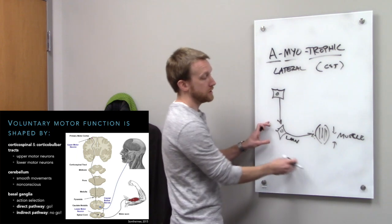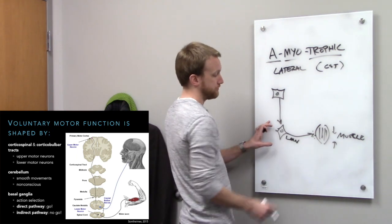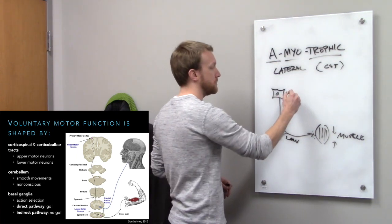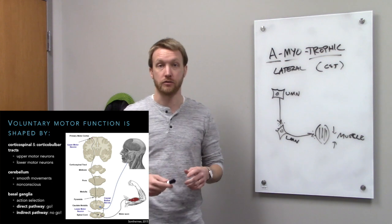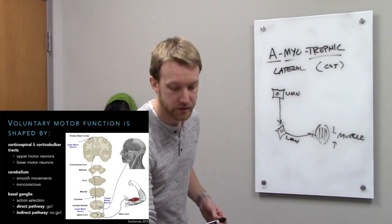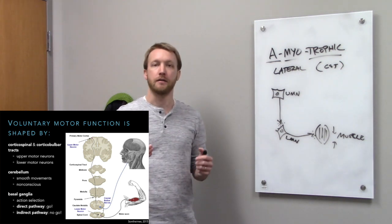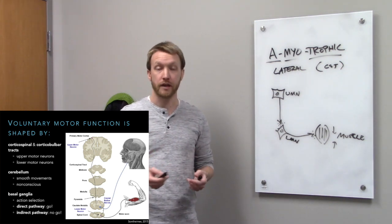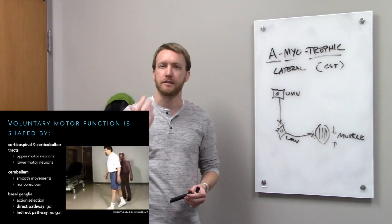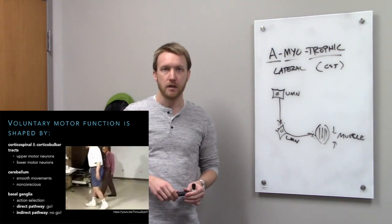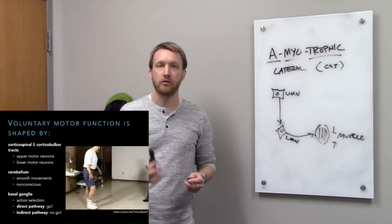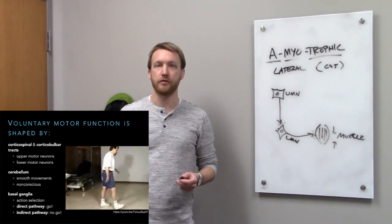Lower motor neurons directly communicate with muscles. In order to activate them, we have to release glutamate from an upper motor neuron. For consciously directed movements, those are in the cortex. We also have non-consciously directed movements carried out by upper motor neurons in the brain stem, which are stimulated by the cerebellum. While we don't have conscious control over these motor neurons, they have powerful effects over our ability to move in a coordinated fashion.